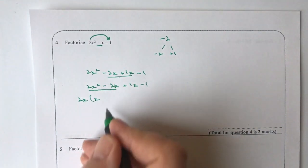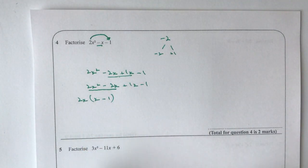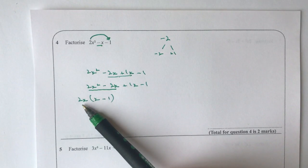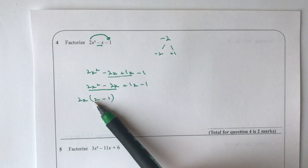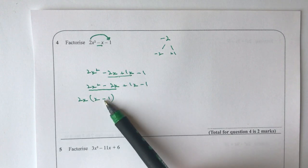So if we look at that, what I've done is I've taken the first two terms and factorised it. So 2x times x will give me 2x squared, and 2x times minus 1 will give me minus 2x.